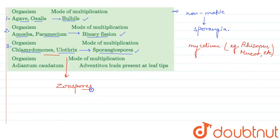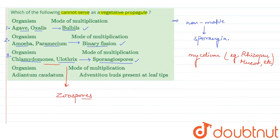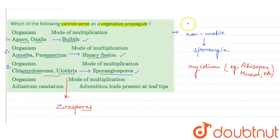Zoospores are formed. The option that cannot serve as a vegetative propagule is Chlamydomonas and Ulothrix, where zoospores are the mode of multiplication. In Rhizopus or Mucor, the mode of multiplication is sporangiospores.